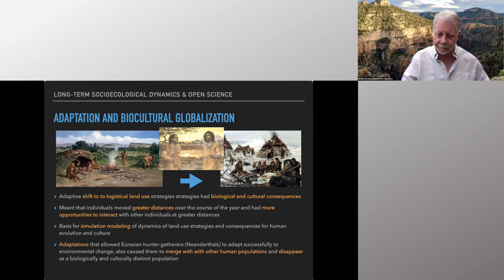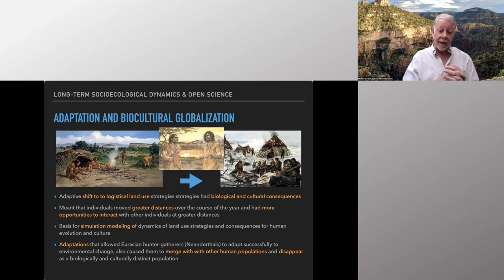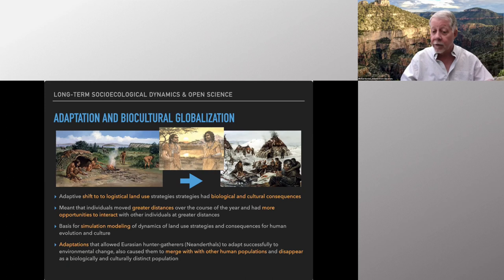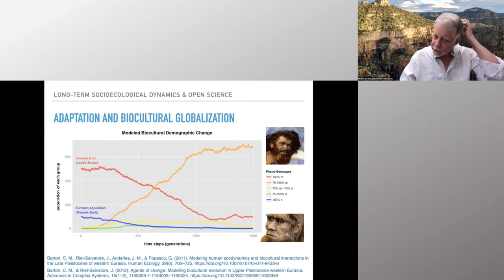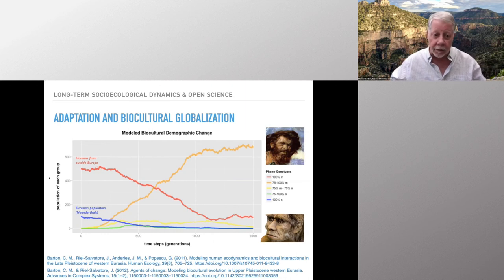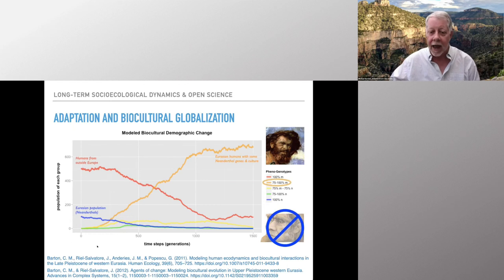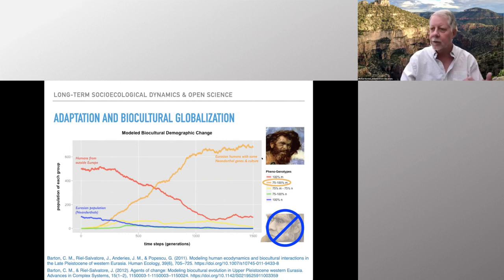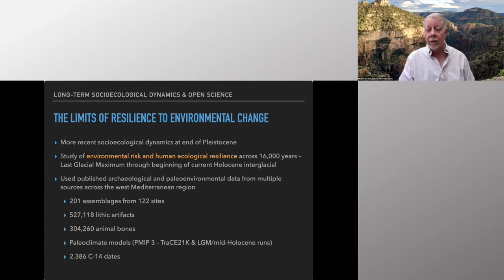What we found is that when these Eurasian hunter-gatherers — Neanderthals — adapted successfully to environmental change, their increased interaction with more people also led to them merging with other human populations and disappearing as a biologically and culturally distinct population. The simulation modeling shows that over time, when you increase the amount of interaction, the Neanderthal populations disappear and are replaced by Eurasian populations that have some Neanderthal genes but are no longer a distinct different group. Moving to more recent times: a different study looked at environmental risk and resilience across a mere 16,000 years from the last glacial maximum to the beginning of the current interglacial.